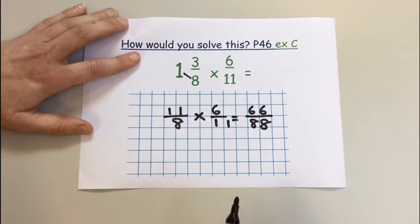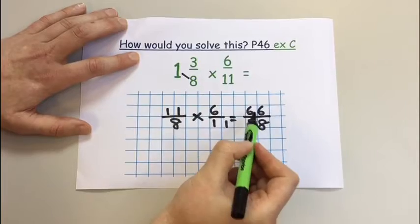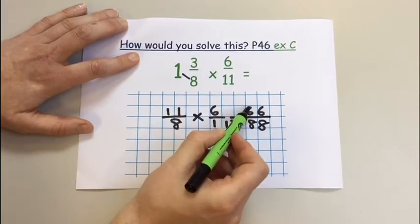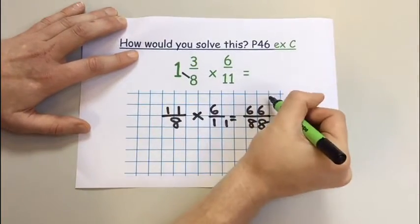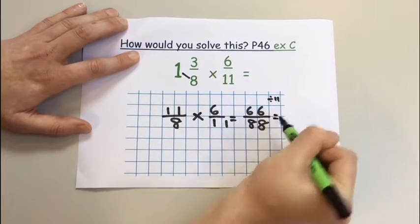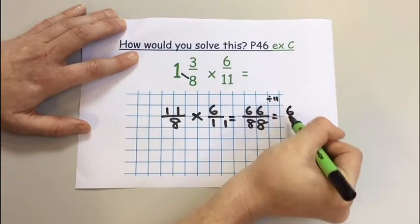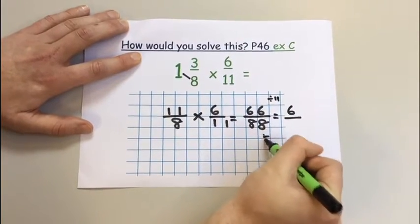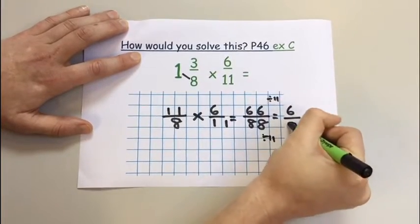I now need to see if I can simplify. Do we have a common factor for both of these? Yes, both can be divided by 11. 66 divided by 11 is 6. 88 divided by 11 is 8.